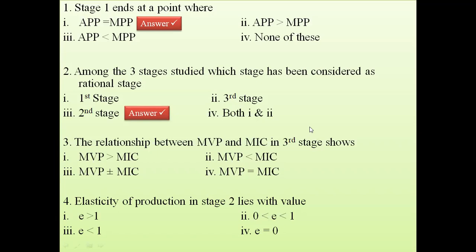The third question: The relationship between MVP (marginal value product) and MIC (marginal input cost) in the third stage. In the third stage it is a stage of negative returns, so everything is negative. Therefore, marginal value product will be less than marginal input cost — MVP less than MIC.